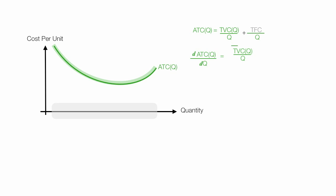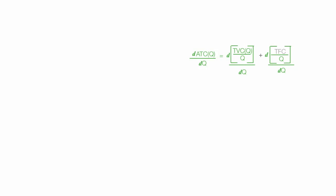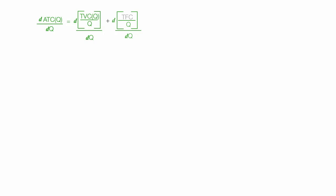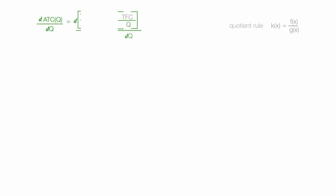So what I do is I take the first derivative of this equation — which is d(TVC/Q)/dQ plus d(TFC/Q)/dQ. How does that change when quantity changes? It looks a little daunting, but I'm going to walk you through the steps. I'm going to use the quotient rule — I have two functions and I'm going to divide them. I'll do these one at a time and step you through this; I'm not going to skip any steps.